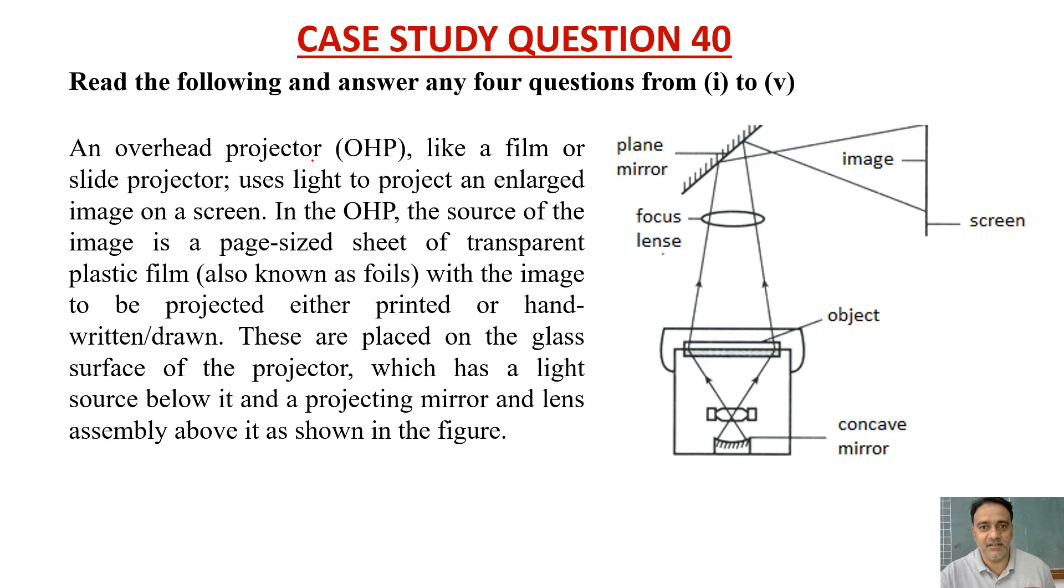An overhead projector, that is OHP, like a film or slide projector, uses light to project an enlarged image on a screen. In the OHP, the source of the image is a page-sized sheet of transparent plastic film known as foils.